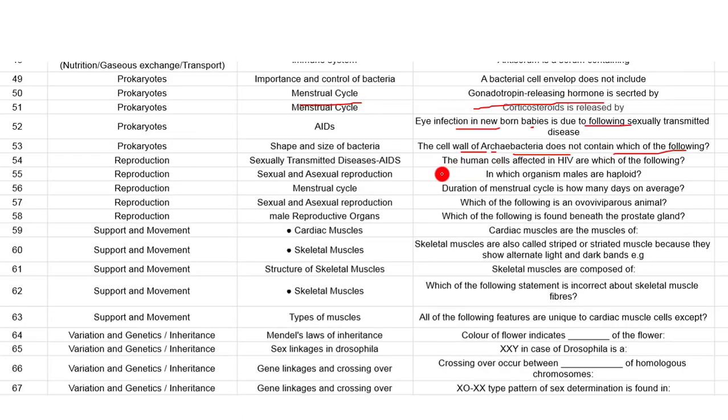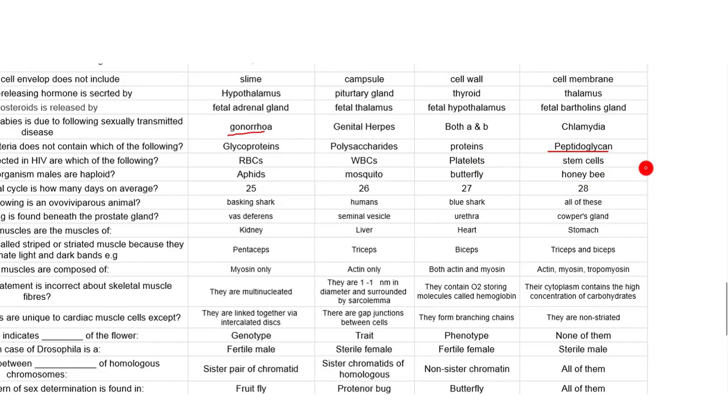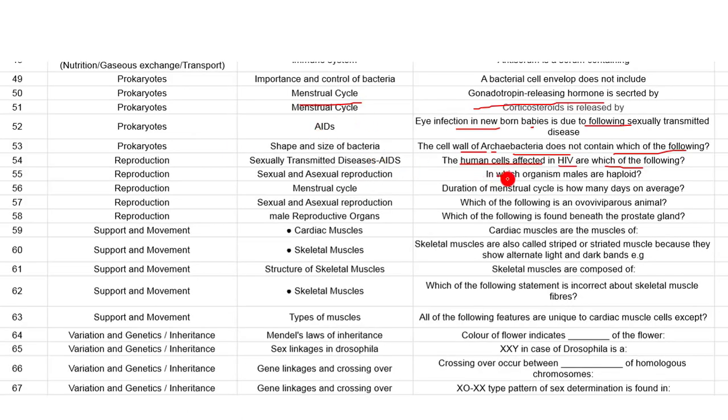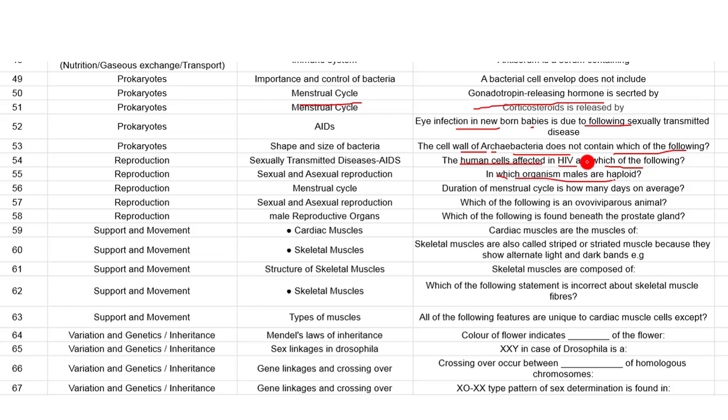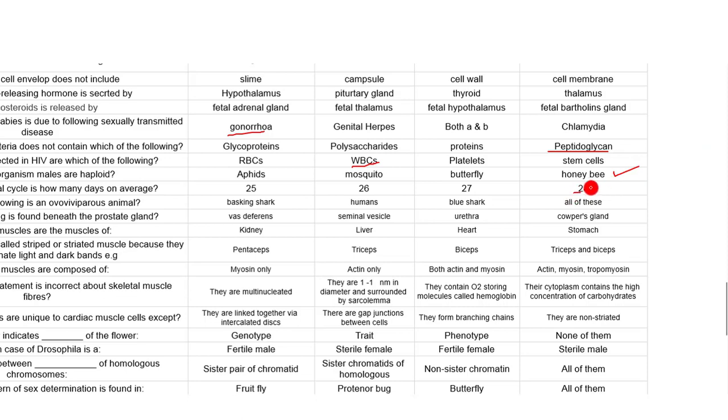The cell wall of archaebacteria does not contain peptidoglycan. The human cells affected in HIV are T helper cells. In which organisms are males haploid? Males in honey bees - these undergo parthenogenesis. Males are haploid and females are diploid. Duration of the menstrual cycle is on average 28 days. These are easy questions.